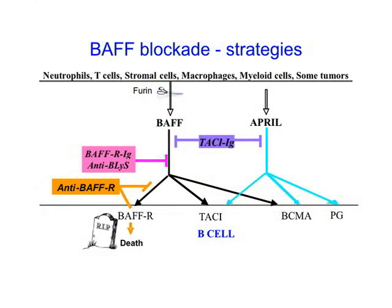An alternate strategy is to use a fusion protein of TACI with immunoglobulin. This binds to both BAF and APRIL, preventing them from binding to their receptors, so no signals are received through any of the receptors when one uses TACI-Ig. There is a third strategy that has been largely abandoned by pharma, which is to use an antibody to the BAF receptor. This basically kills B cells that express the BAF receptor, so in a sense it's similar to TACI-Ig, but it also depletes B cells.